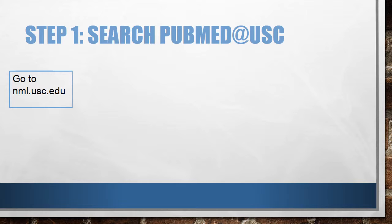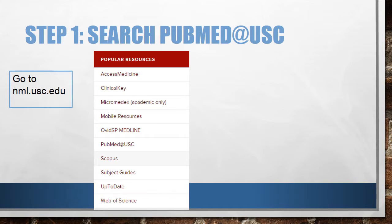First, we'll search PubMed at USC. Start at the Norris Medical Library homepage. In the red Popular Resources box, find a link to PubMed at USC and click this link.